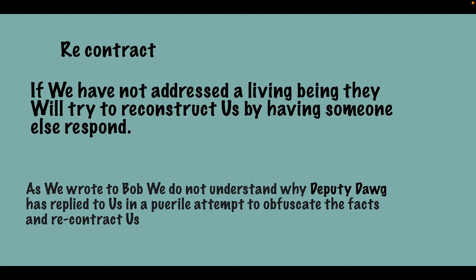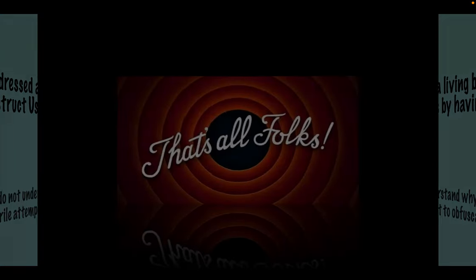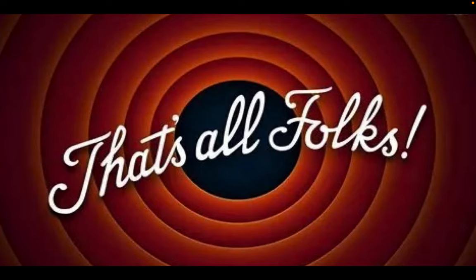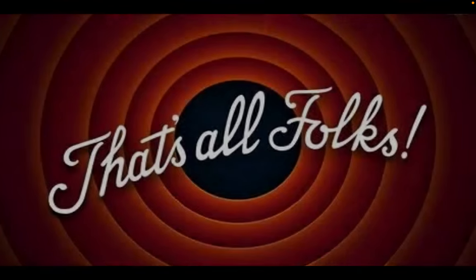If they try to recontract us because we have addressed someone other than the living being, they will get someone else to write to us. All we need to do is write back to them without addressing the subject matter, but just saying to them: as we wrote to Bob, we do not understand why Deputy Dawg has replied to us in a puerile attempt to obfuscate the facts and recontract us. That should put an end to any further recontracting. And folks, that is it.